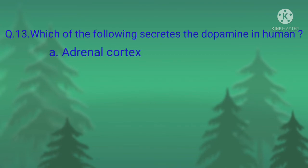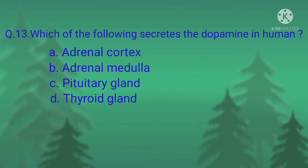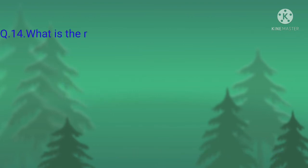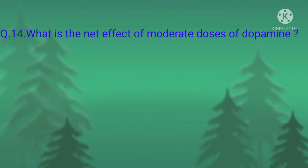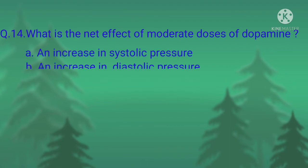Question number thirteen: which of the following secretes dopamine in humans? Option A, adrenal cortex; option B, adrenal medulla; option C, pituitary gland; option D, thyroid gland. The correct option is option B, adrenal medulla.